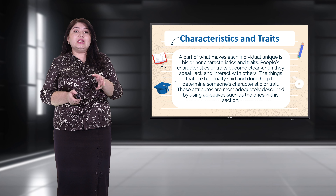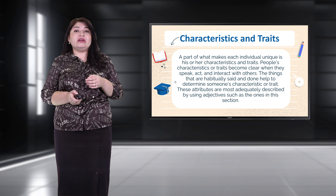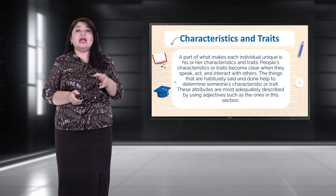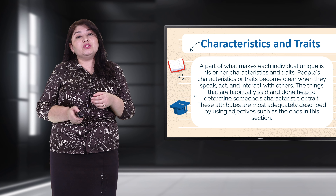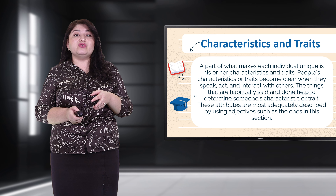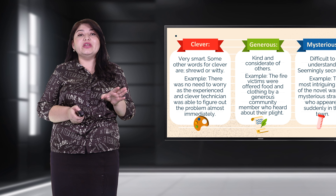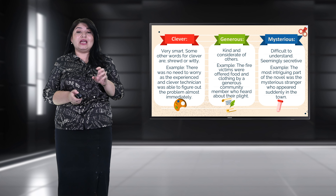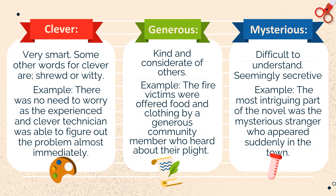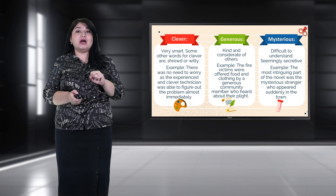Characteristics and traits: part of what makes each individual unique is his or her characteristics and traits. These become clear when people speak, act, or interact with others. These attributes are best described using adjectives. 'Clever' — very smart; other words for clever are shrewd or witty. Example: 'There was no need to worry as the experienced and clever technician was able to figure out the problem almost immediately.' 'Mysterious' — difficult to understand, seemingly secretive. Example: 'The most intriguing part of the novel was the mysterious stranger who appeared suddenly in the town.'